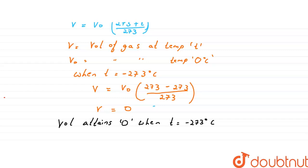To avoid this, a new scale called the Kelvin scale, or the absolute scale of temperature, was introduced. Minus 273 degrees Celsius corresponds to zero on the Kelvin scale. It is a scale with its zero at minus 273 degrees Celsius — the lowest temperature which can never be reached, where all molecular motions cease. On the Kelvin scale, all values are positive, and each degree is equal to a degree on the Celsius scale.